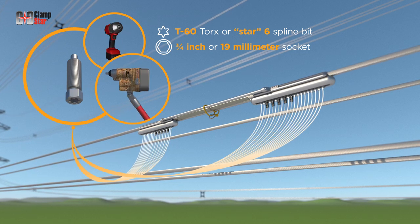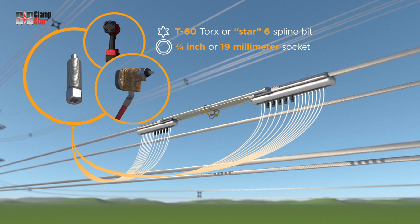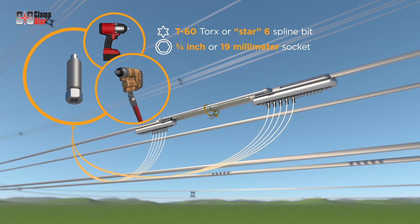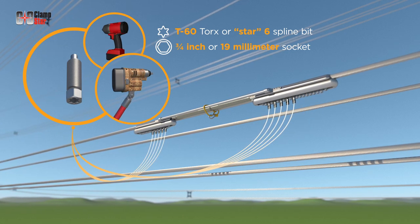For full tension units, the standard bolts all tighten in multiple passes until the head shears. Then, the full tension keepers are tightened to shear in a single pass. Beginning at the innermost fastener, tighten the standard bolts in a linear fashion.